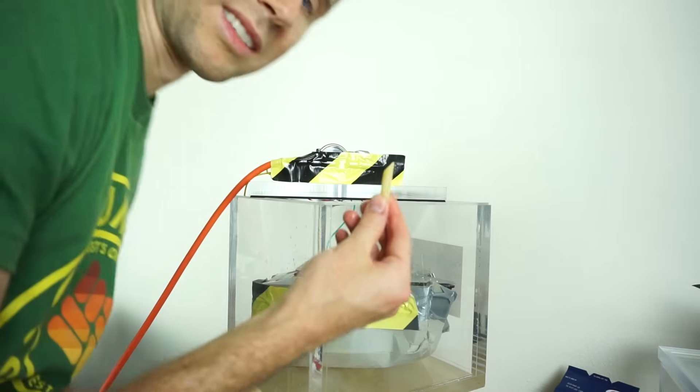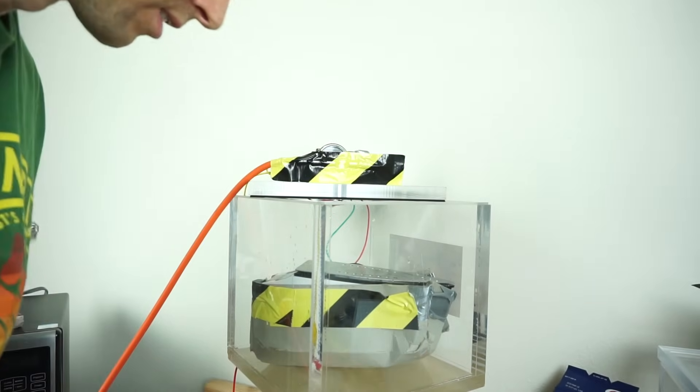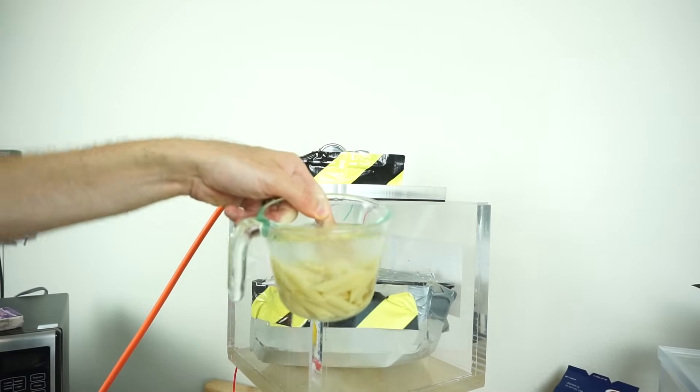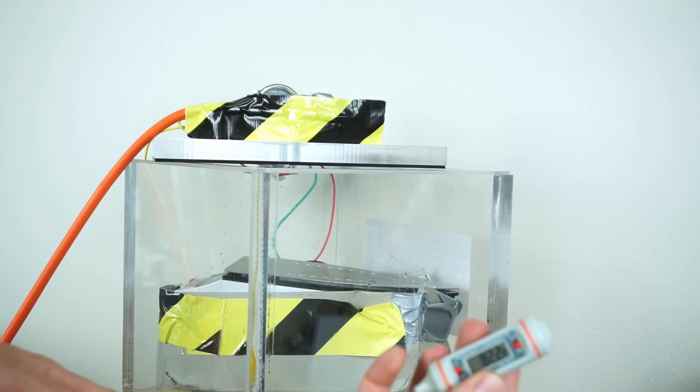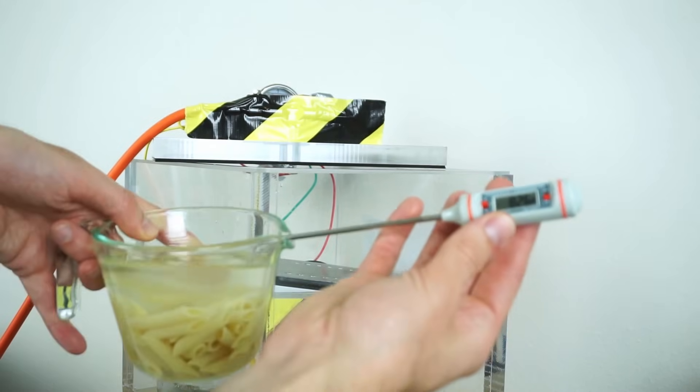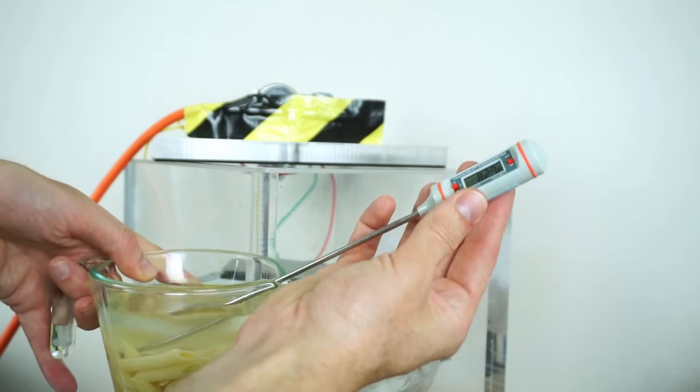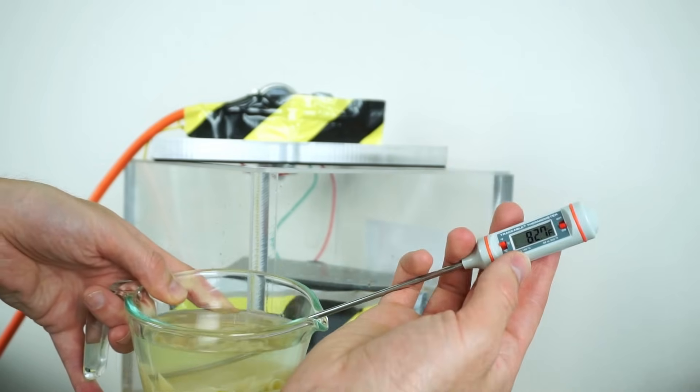You can see the pasta definitely isn't cooked. Still crunchy. So no, you cannot cook pasta in a vacuum chamber. So the temperature of the water is around 82 degrees Fahrenheit. That's about the temperature of the water that I put in. So you can see it did not get hotter in the vacuum chamber. It probably cooled off a little bit.